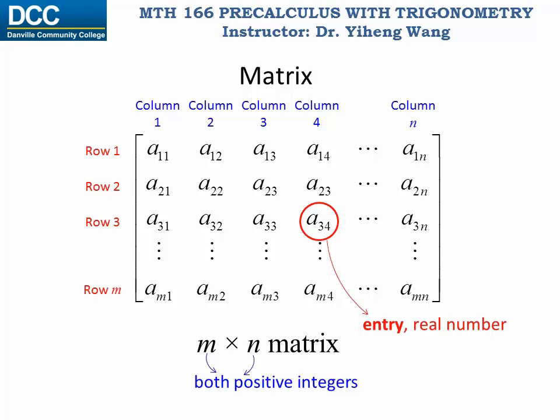For example, for this entry A, its subscript reads, which means that this entry belongs to row 3 and column 4.